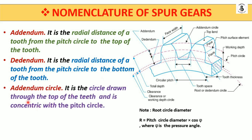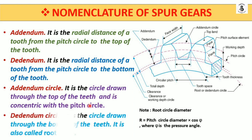The addendum circle is the circle drawn through the top of the teeth and is concentric with the pitch circle. Similarly, the dedendum circle is the circle drawn through the bottom of the teeth, and it is also called the root circle.